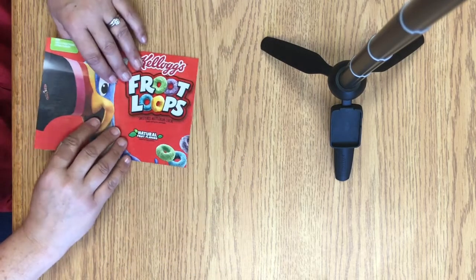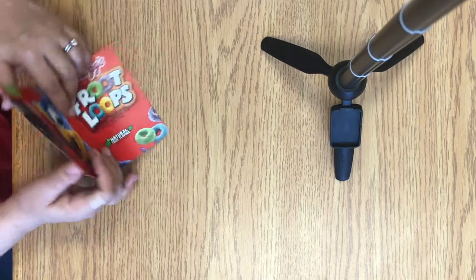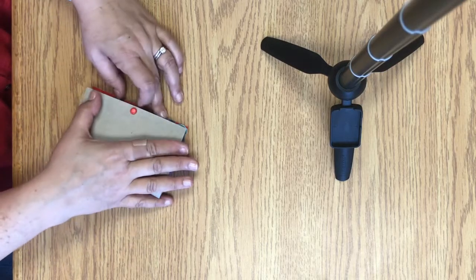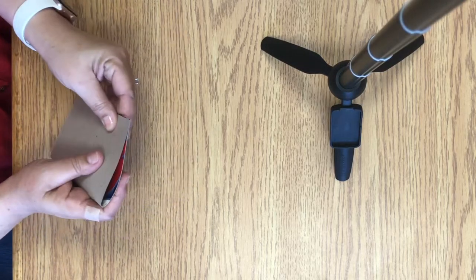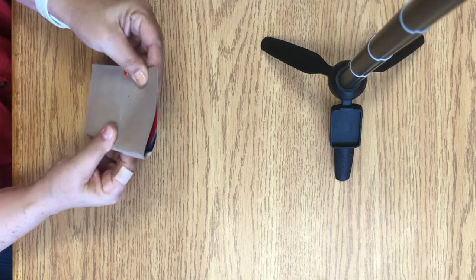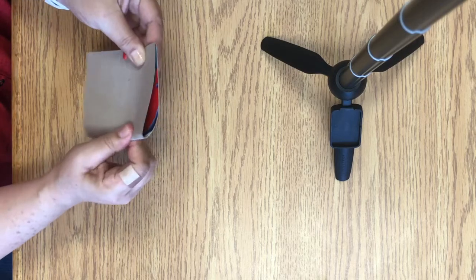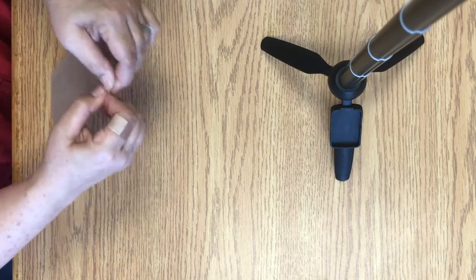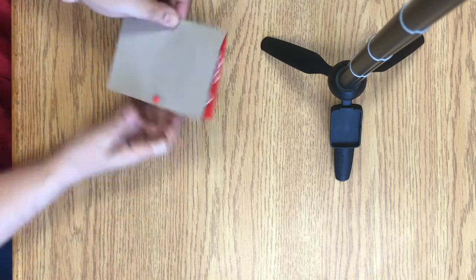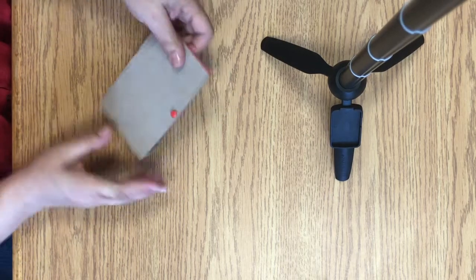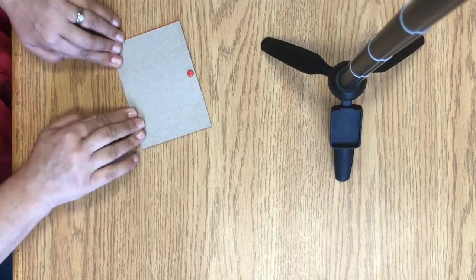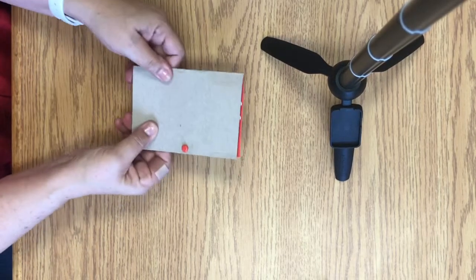Next we're going to fold the cardboard in half to make the cover. There we go. Now we have the outside of the notebook.